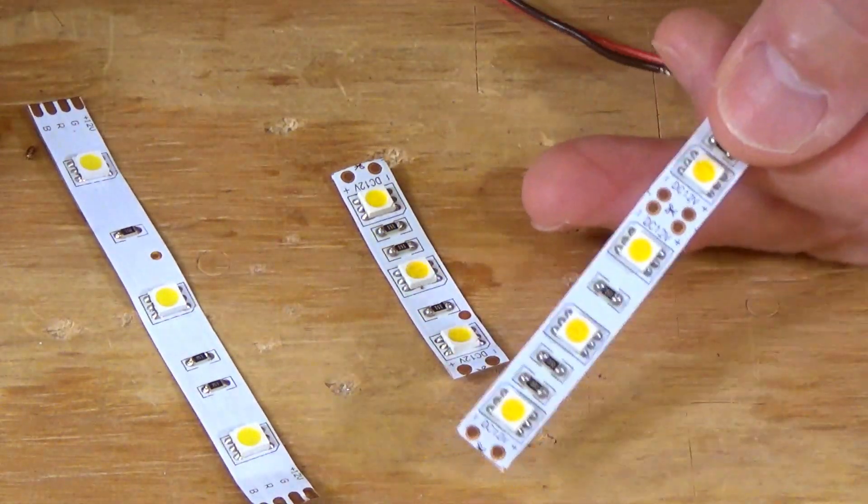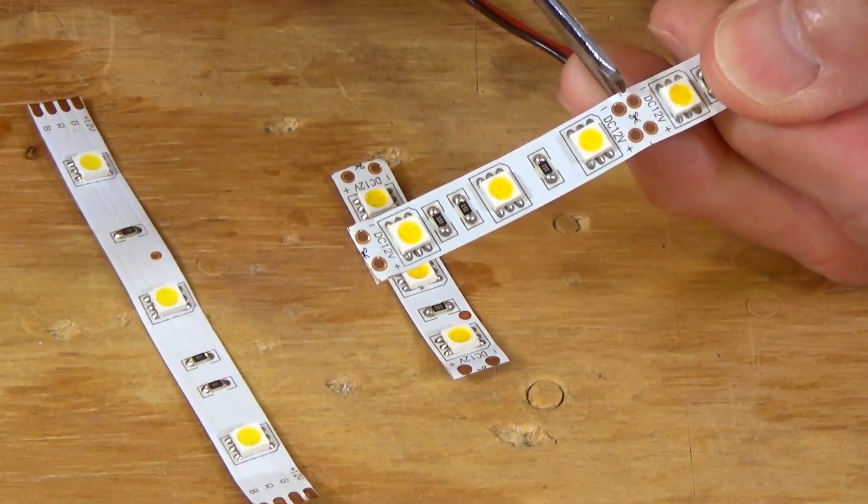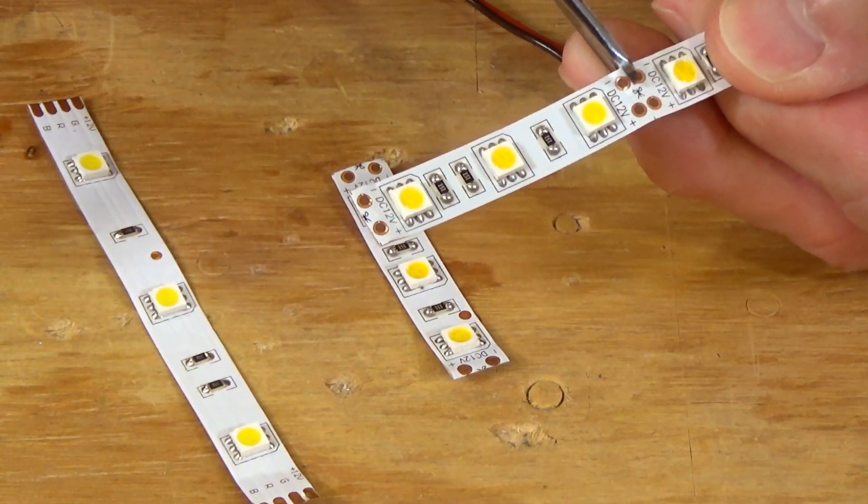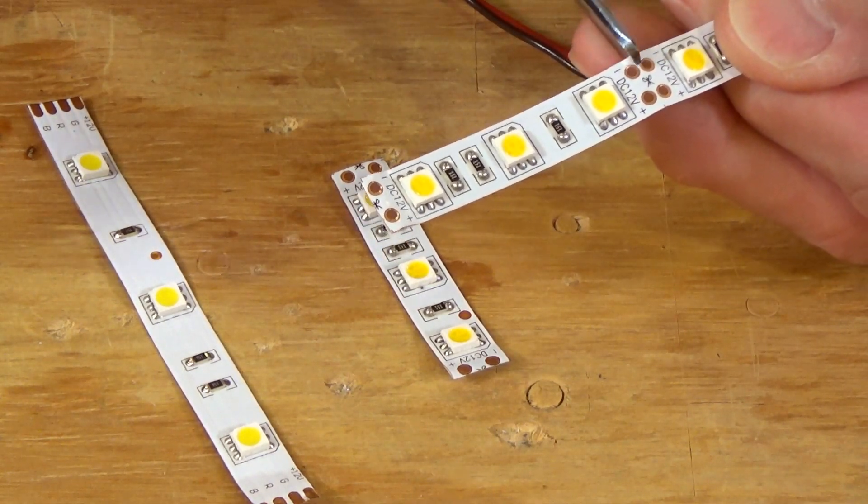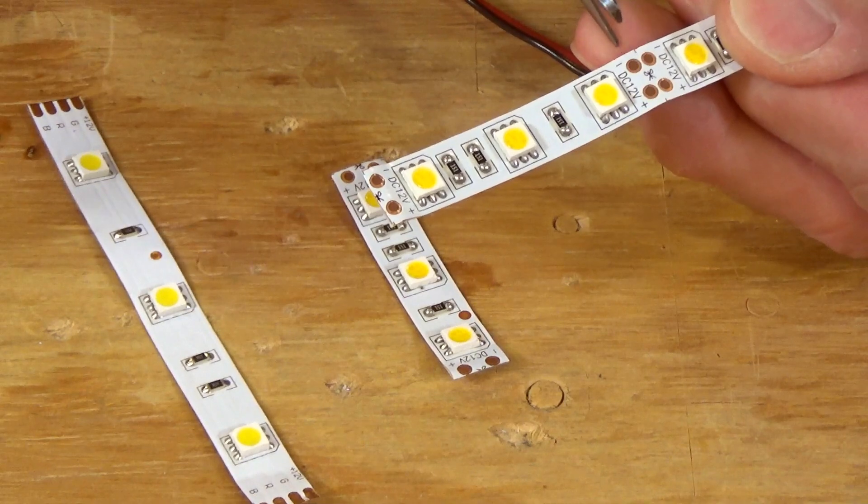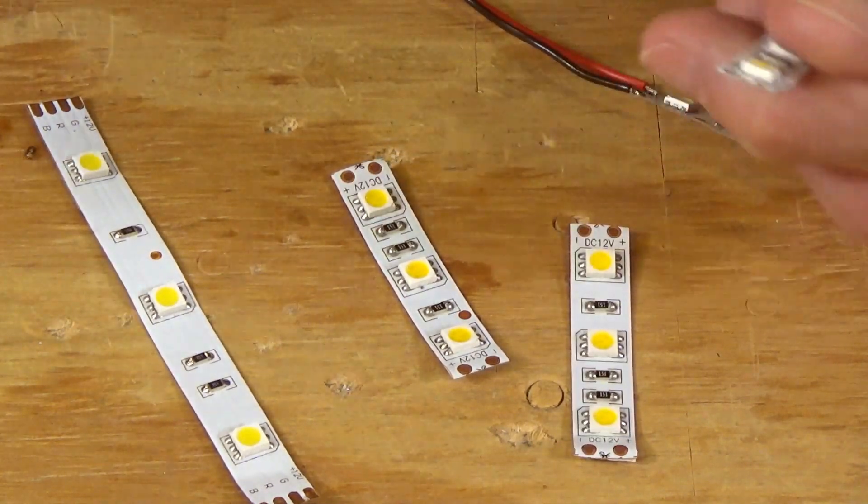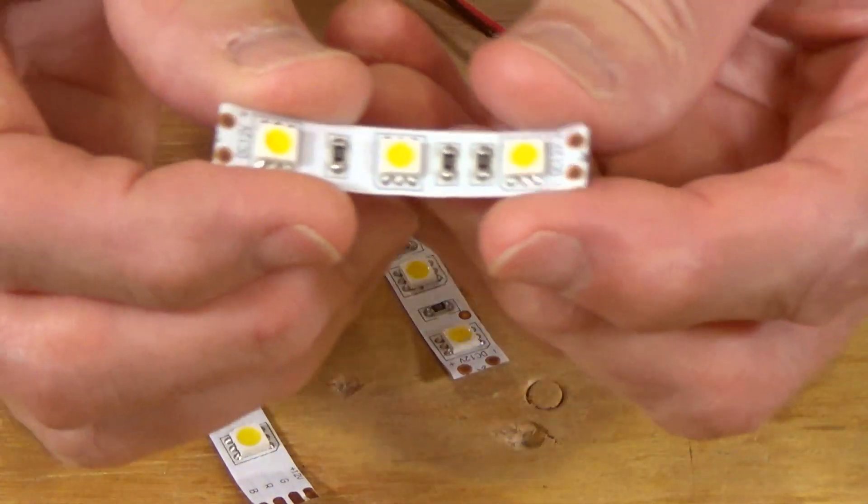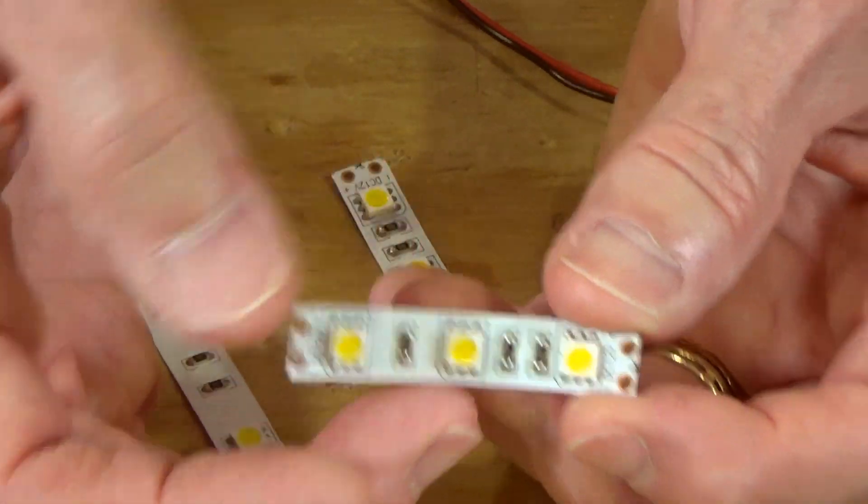So let's take a look at this. If you look here on these rolls, right at this point there's a little cut mark with a pair of scissors indicating that, and there's four copper-colored tabs. All you have to do is take your scissors and snip, and you have a three LED strip that you can use in your buildings.